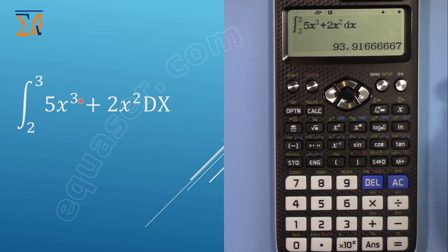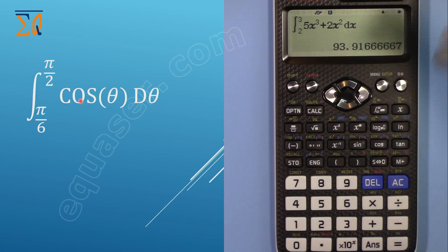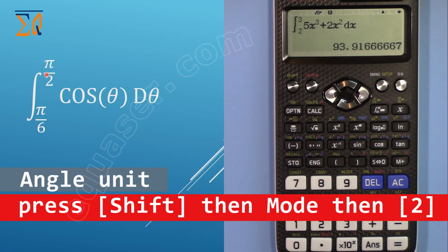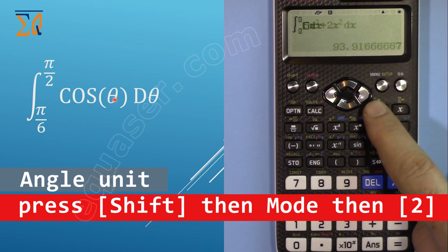Let's say you have a function cosine of theta dθ from π/6 to π/2. Remember, in this case the value of angle must be in radians if you want to do a radian calculation. Now again press this button.